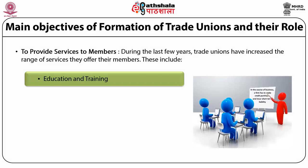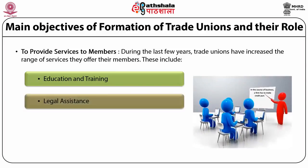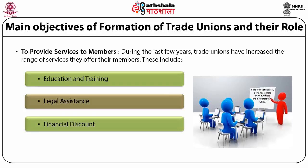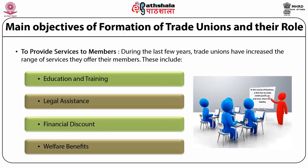b. Legal assistance. As well as offering legal advice on employment issues, some unions give help with personal matters like housing, wills and debt. c. Financial discounts. People can get discounts on mortgages, insurance and loans from unions. d. Welfare benefits. One of the earliest functions of trade unions was to look after members who had hard times. Some of the older unions offer financial help to their members when they are sick or unemployed.